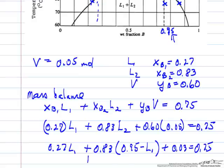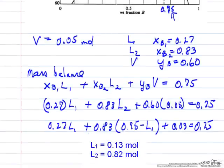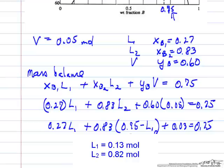We can solve this algebraic equation for liquid 1. Liquid 1 is 0.13 moles. Liquid 2 is 0.82 moles.